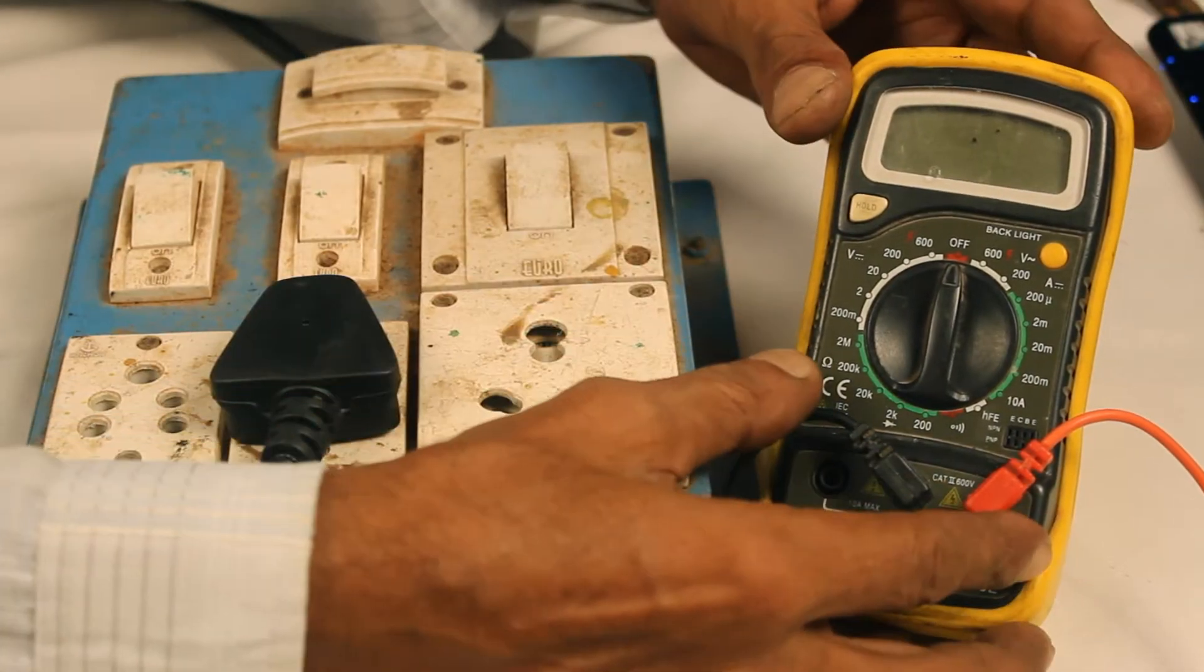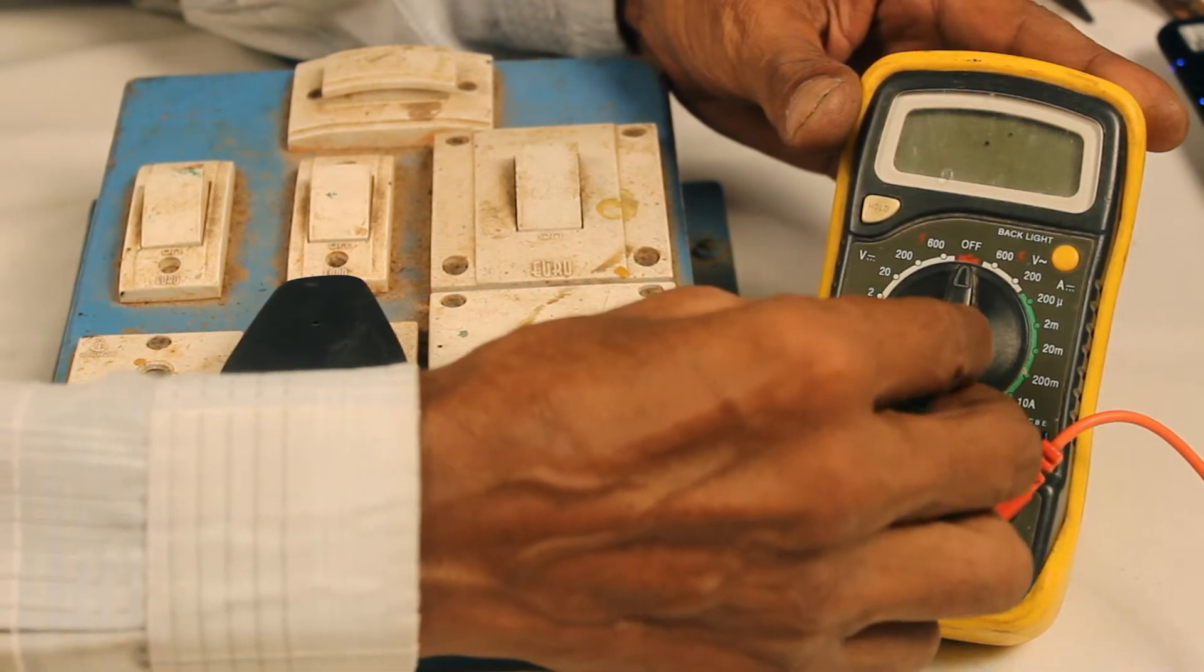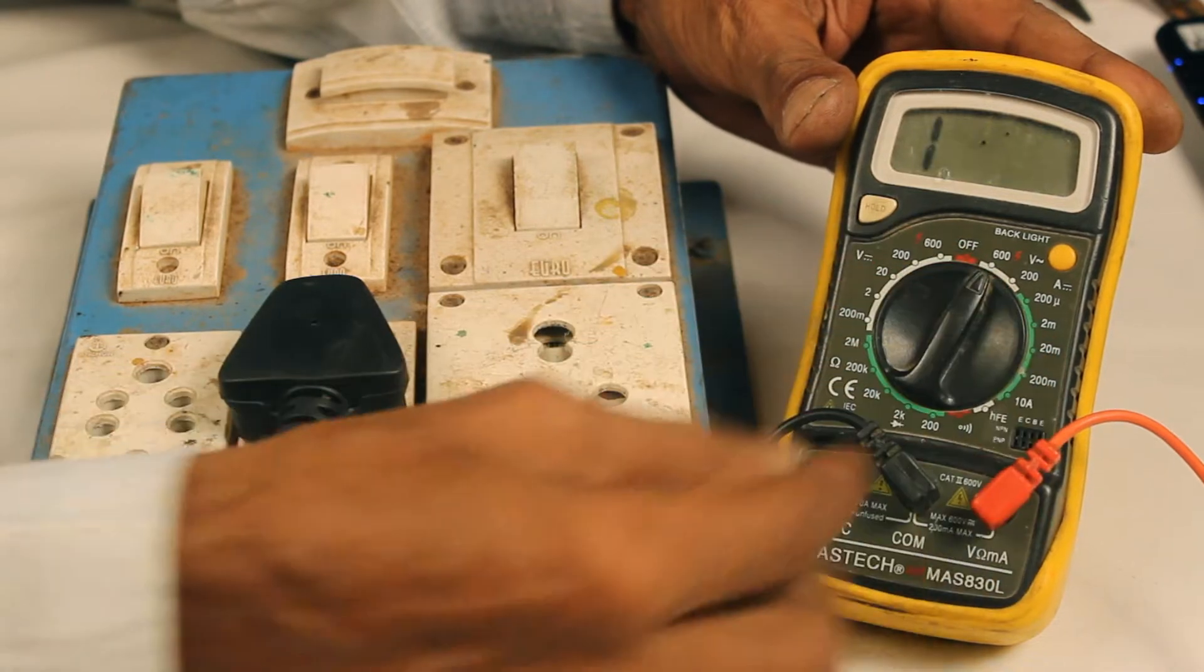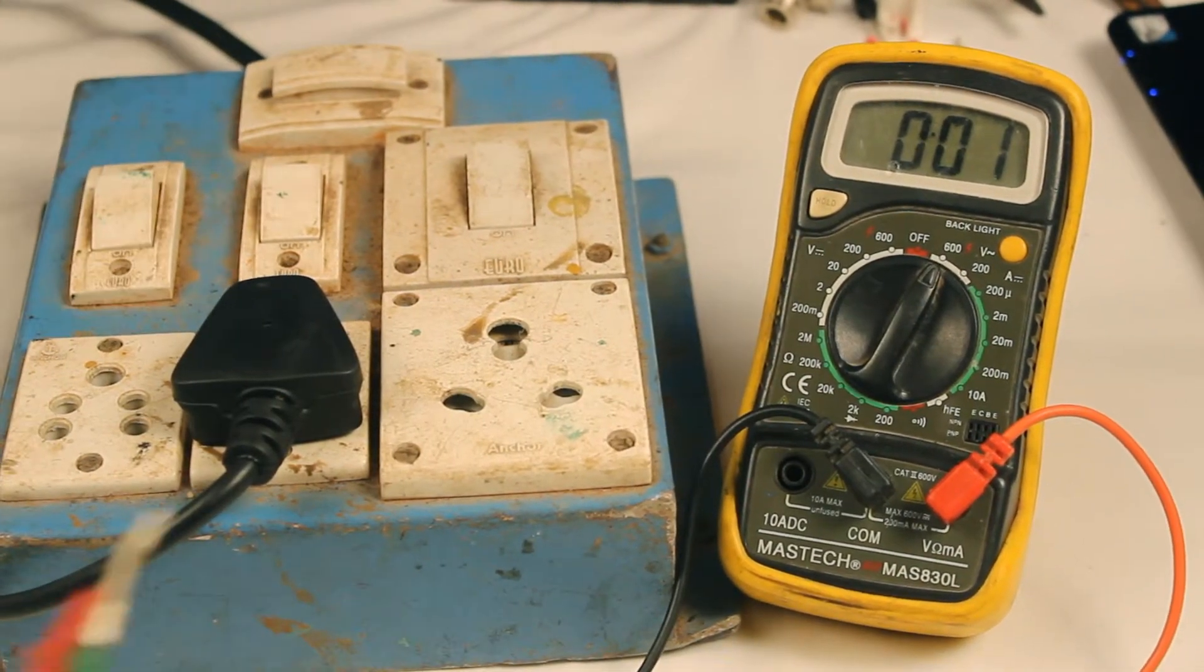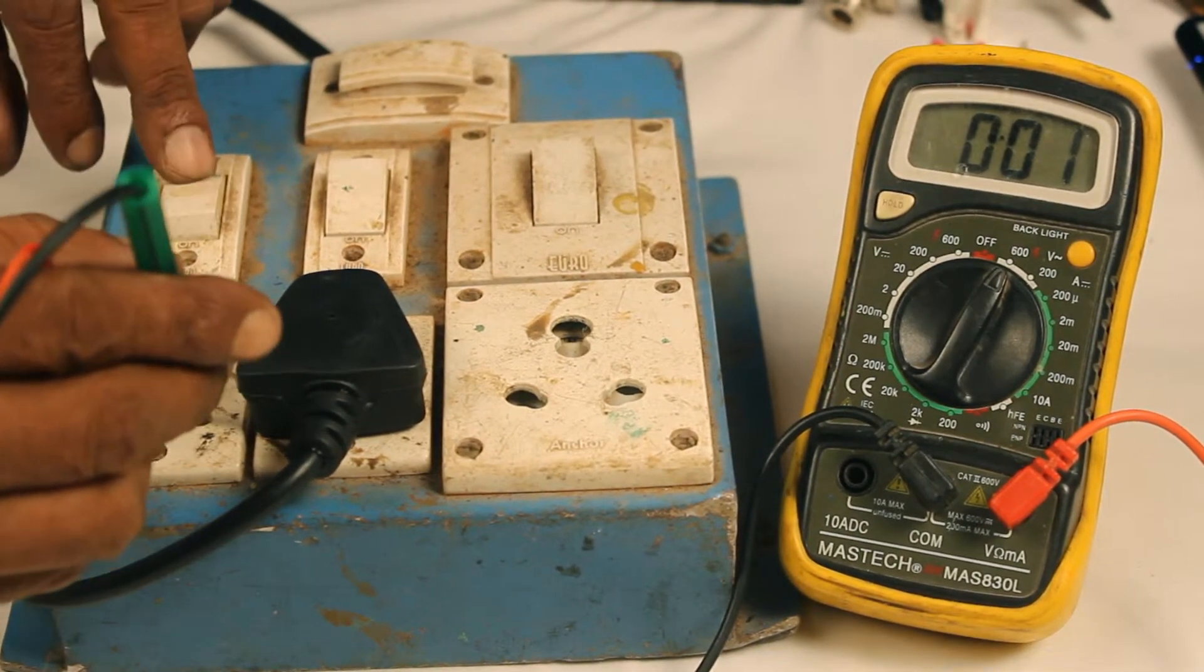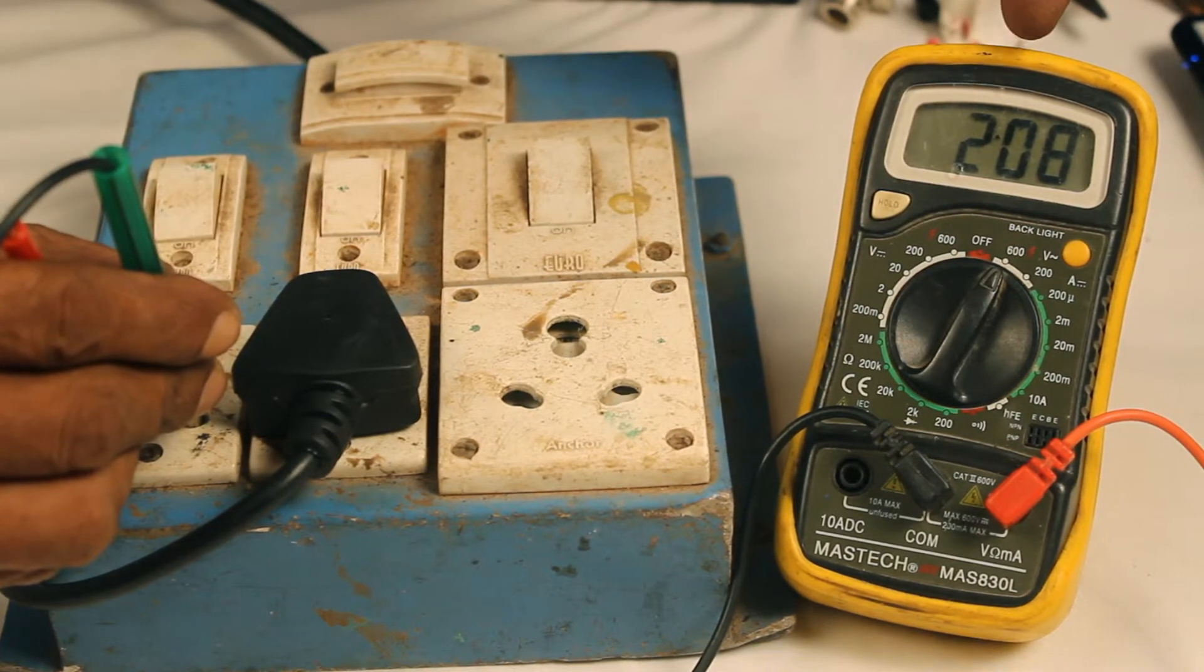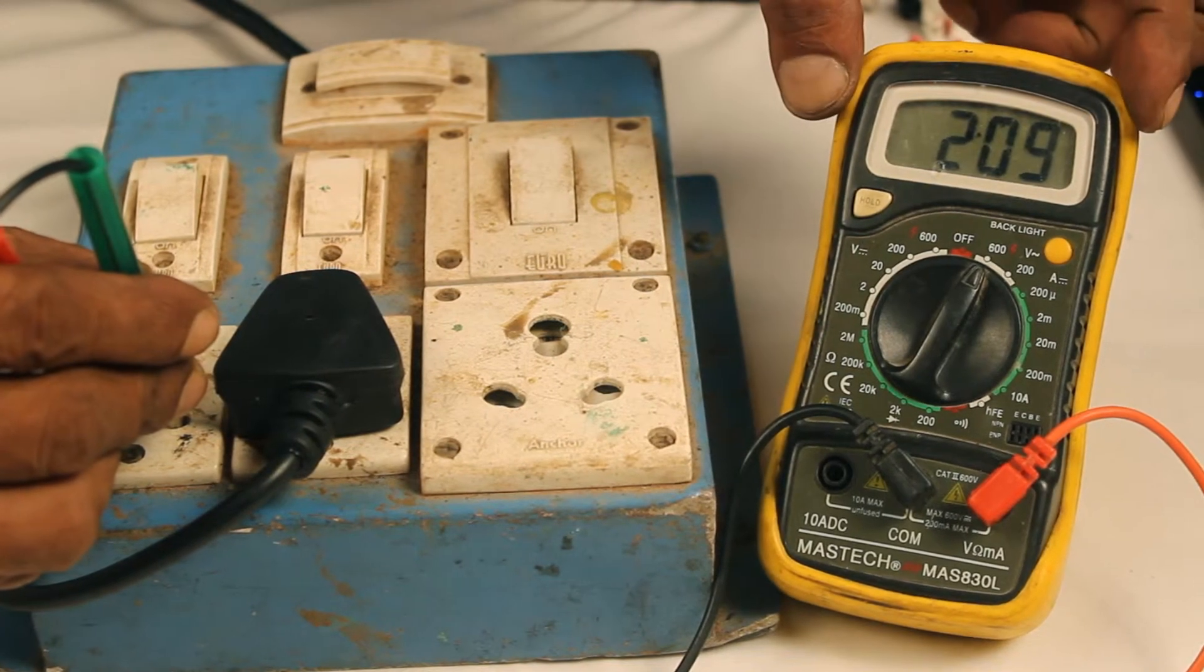This instrument here is a multimeter. We shall use it to measure AC voltage going over to 600 volt range and I am going to plug the probes into the valve socket. Switch on. We get a reading of 208. Nominal voltage is supposed to be 230. Right now the supply voltage is a little bit low.